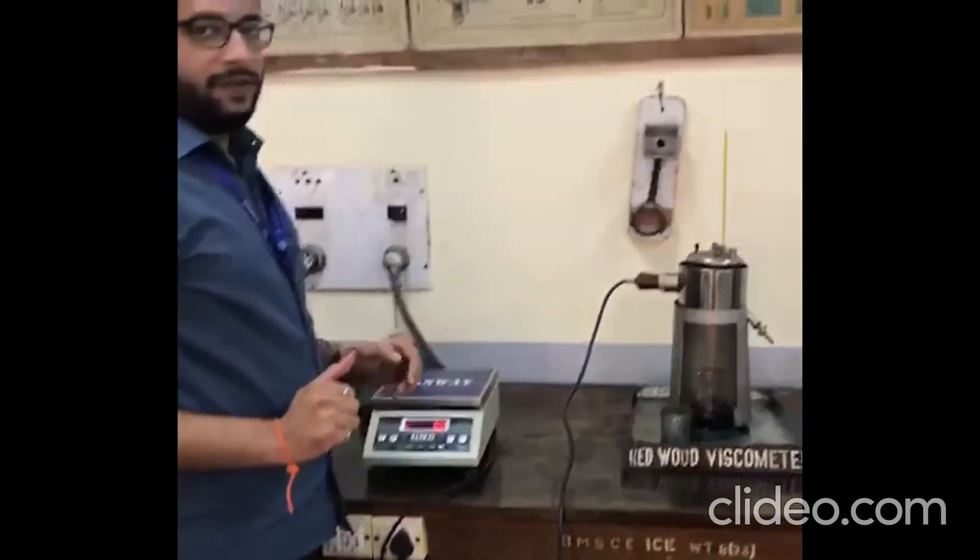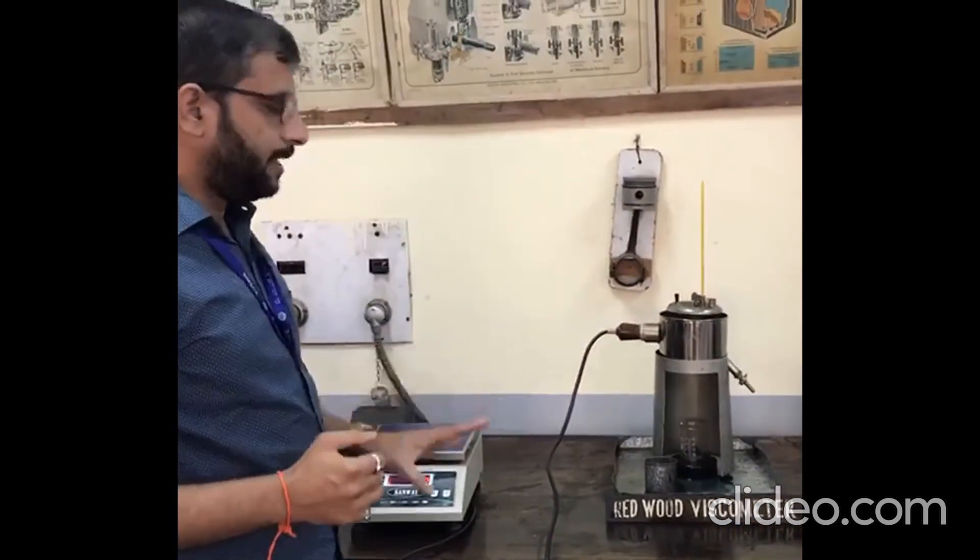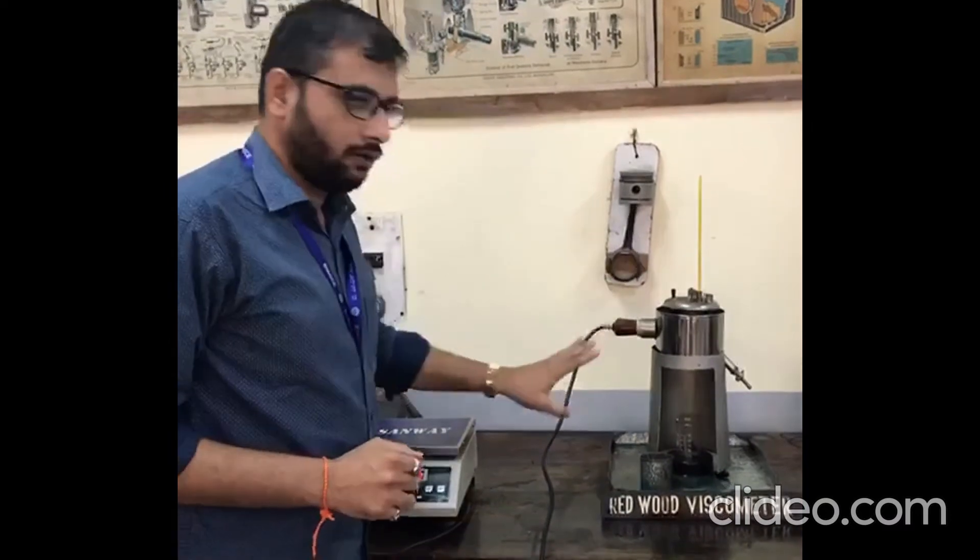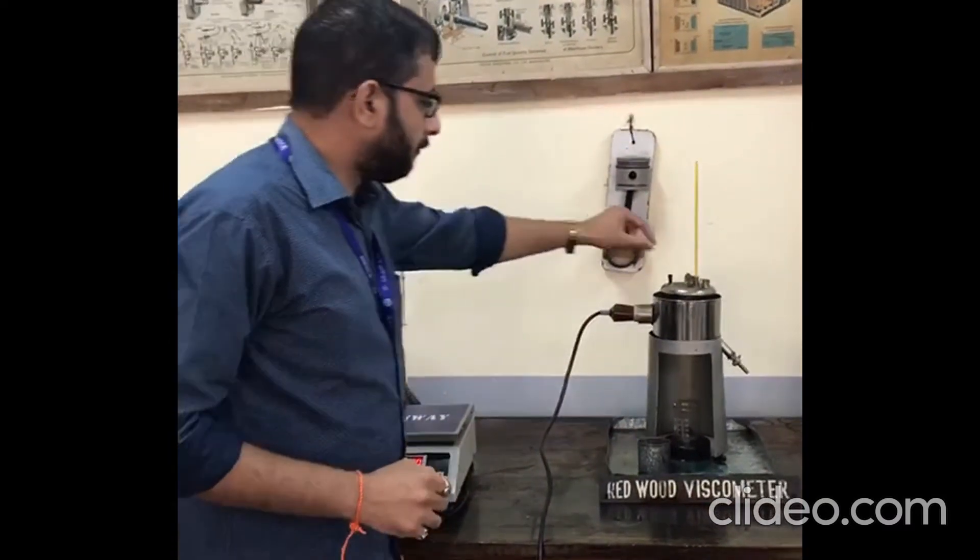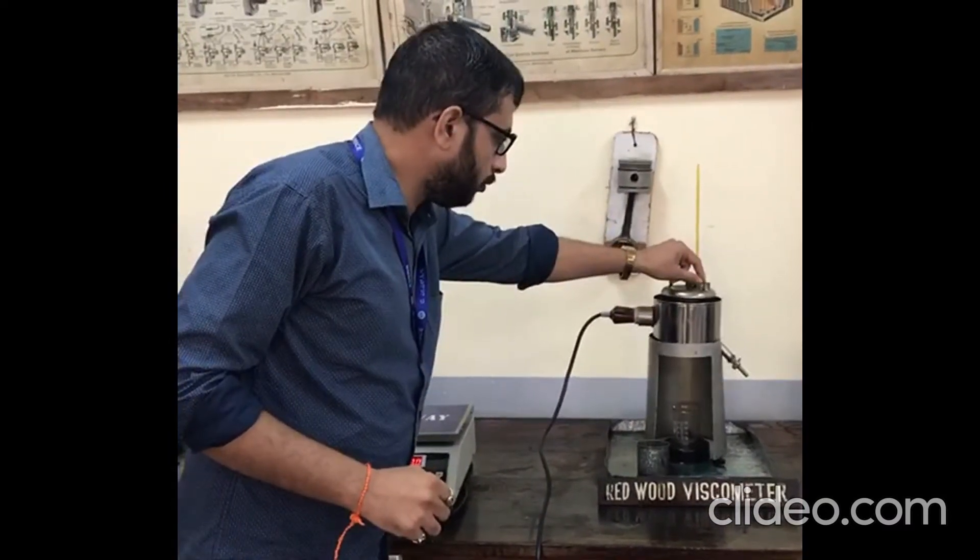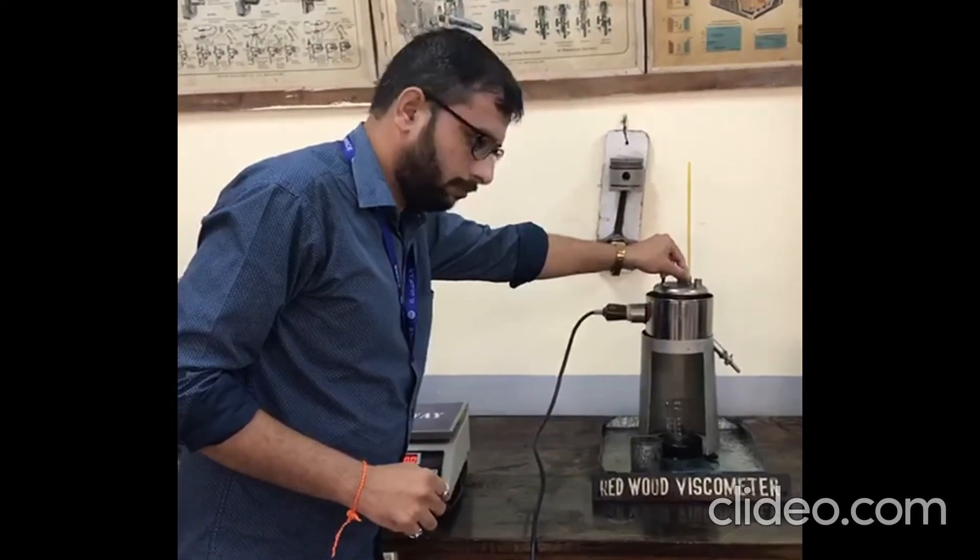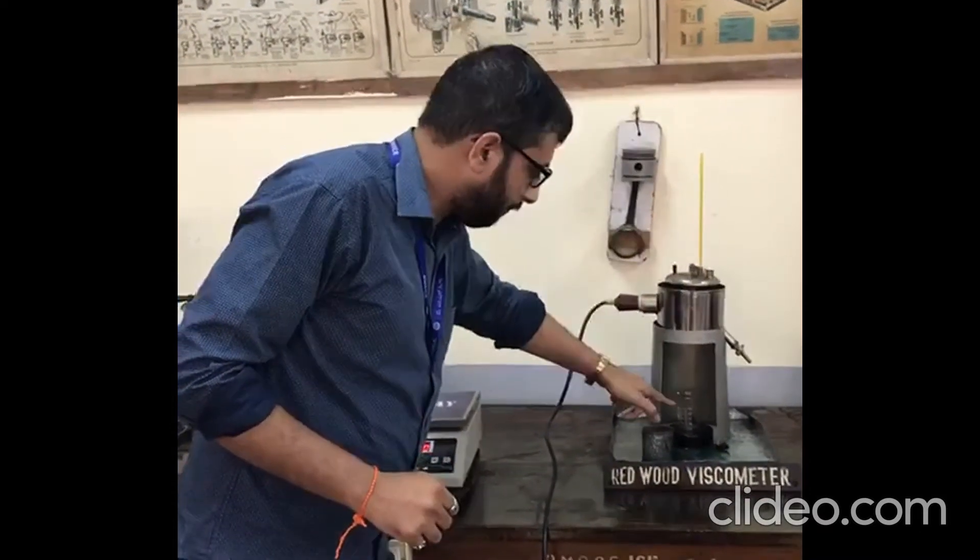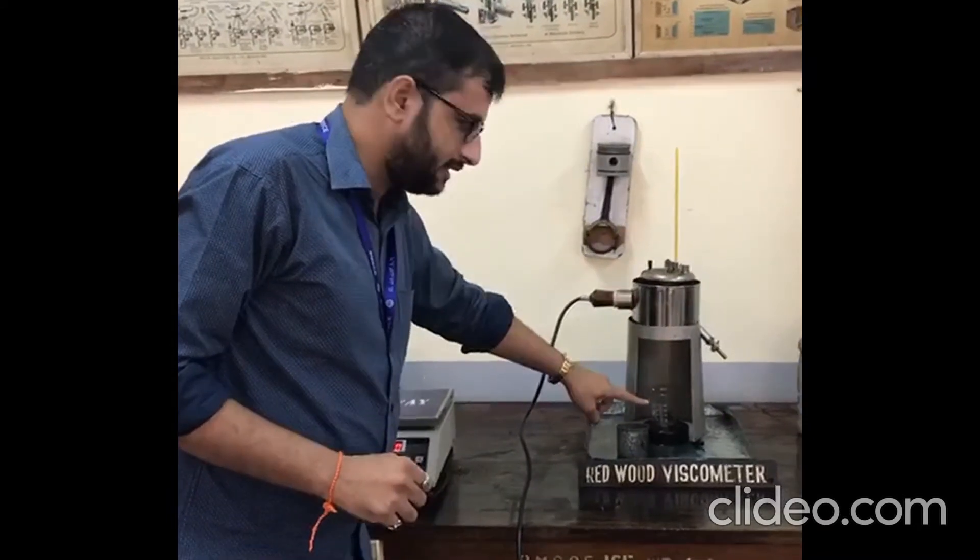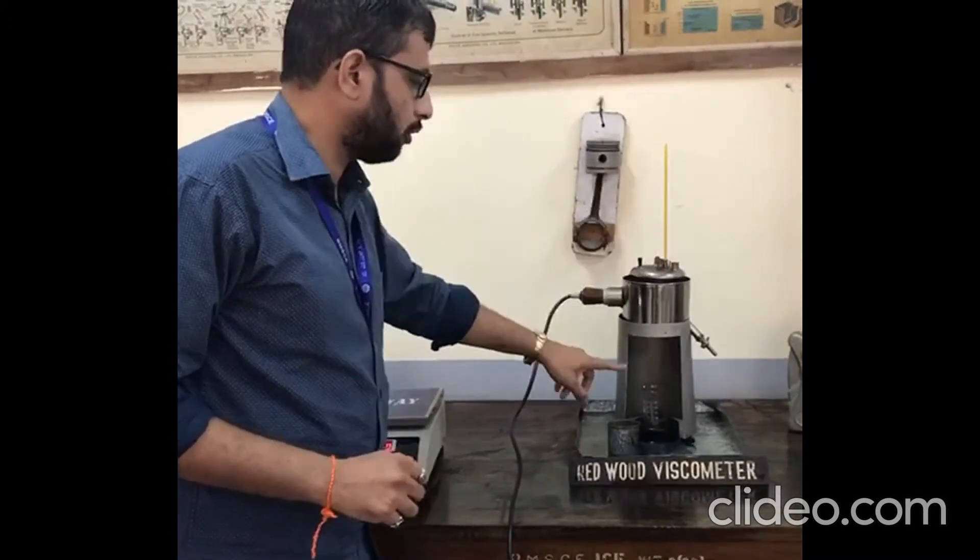After that, we need to measure the time requirement for 50 cc of oil. To start that, we need to open the valve, make sure that it is exactly 50 cc, and then close it and stop the stopwatch.